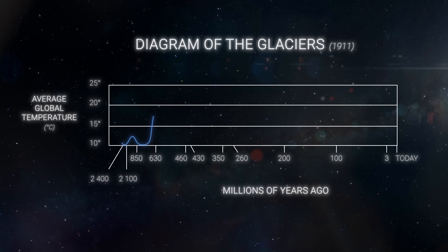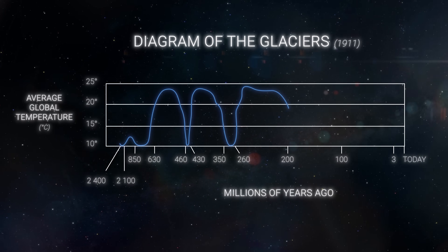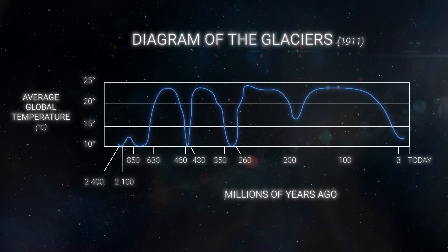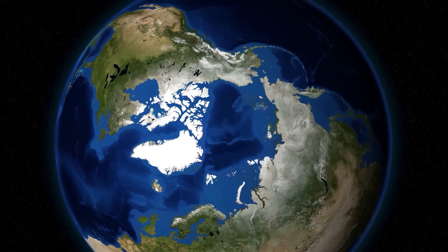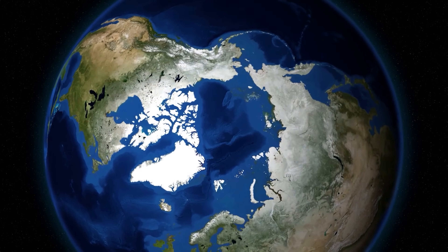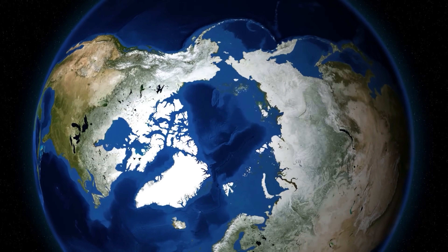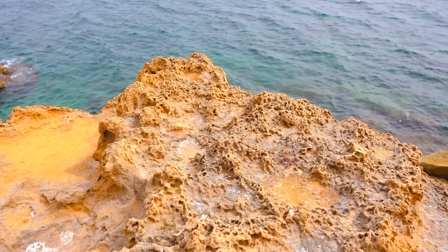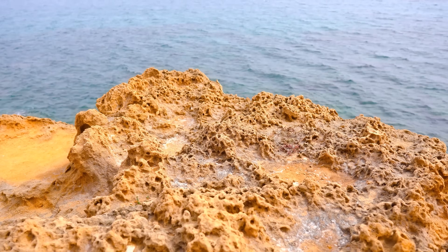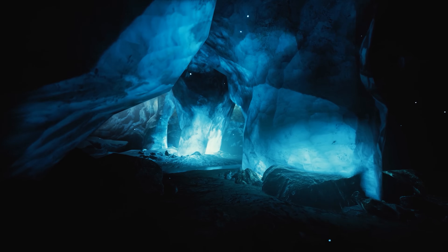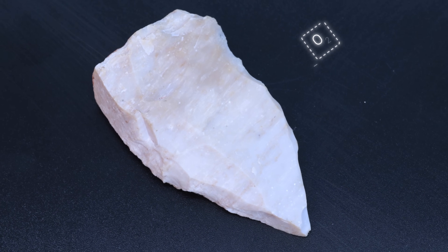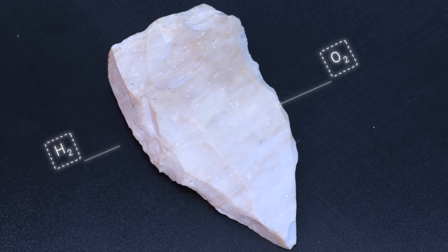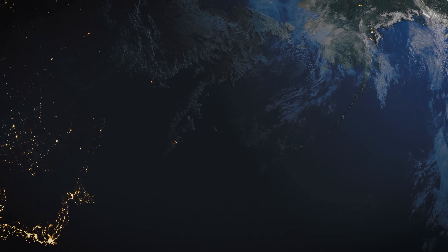In 1911, Milankovitch began his landmark work on a diagram of the glaciers of the Pleistocene Epoch, which ended about 11,500 years ago. During this period, the continents were covered in ice, and only for short periods of time did the global climate become temperate. In addition to mathematical analysis, Milankovitch also made geological observations, studying ice cores, fossils, and sediments from the ocean floor, to compare the ratio of oxygen to hydrogen to determine the type of climate at the time.